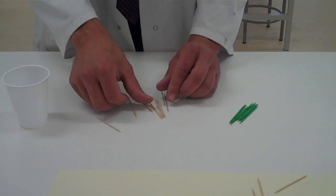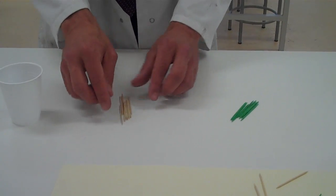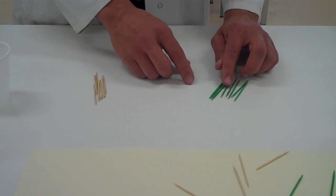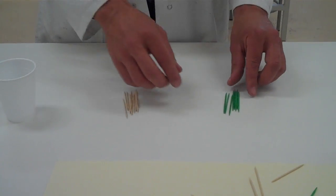Now I've separated them out. I've got 1, 2, 3, 4, 5, 6, 7, 8, 9, 10 of the normals. 1, 2, 3, 4, 5, 6, 7, and 8 of the mutants. So I'd put 10 and 8 into my table.